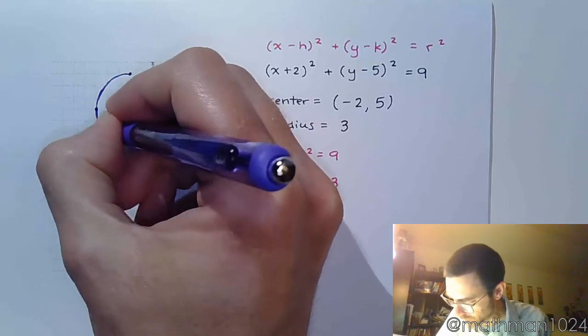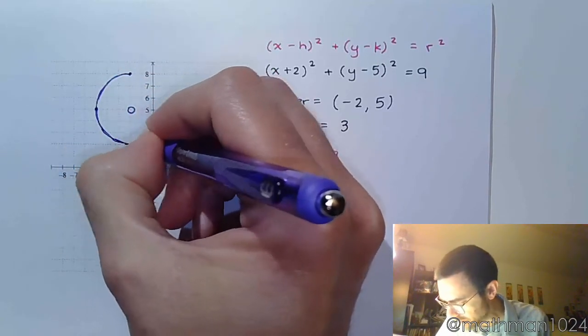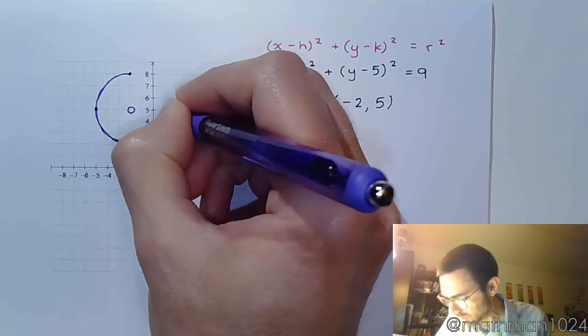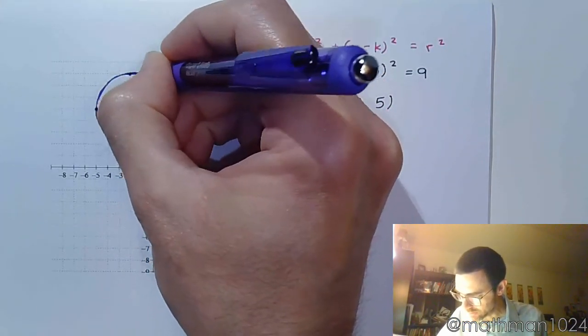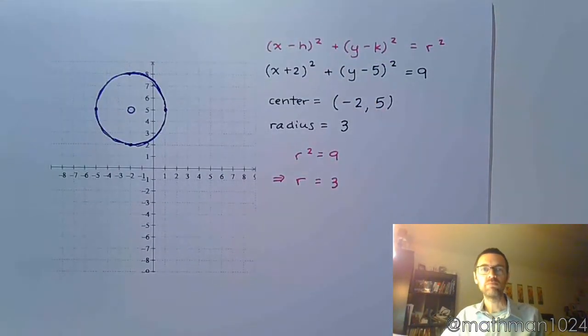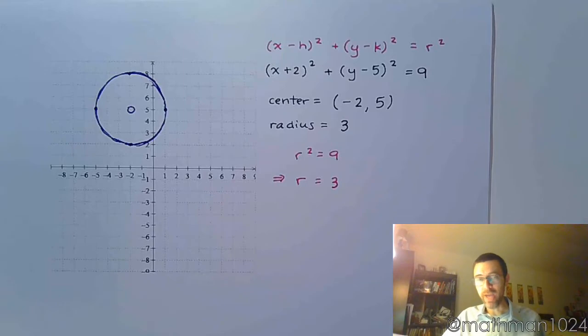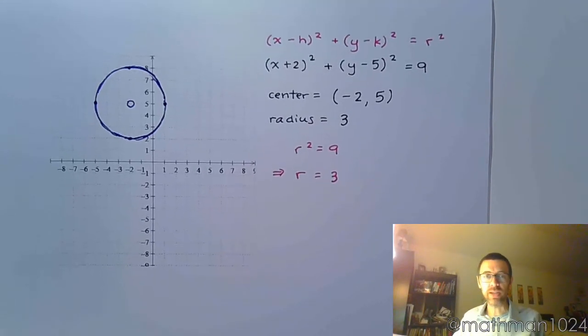So again, we're drawing circles. We're not drawing diamonds. So we do our very best to make sure that we do have something that is accurate. So there you go. So when things are in center radius form, it's really not that bad. Let's take a look at the next example.